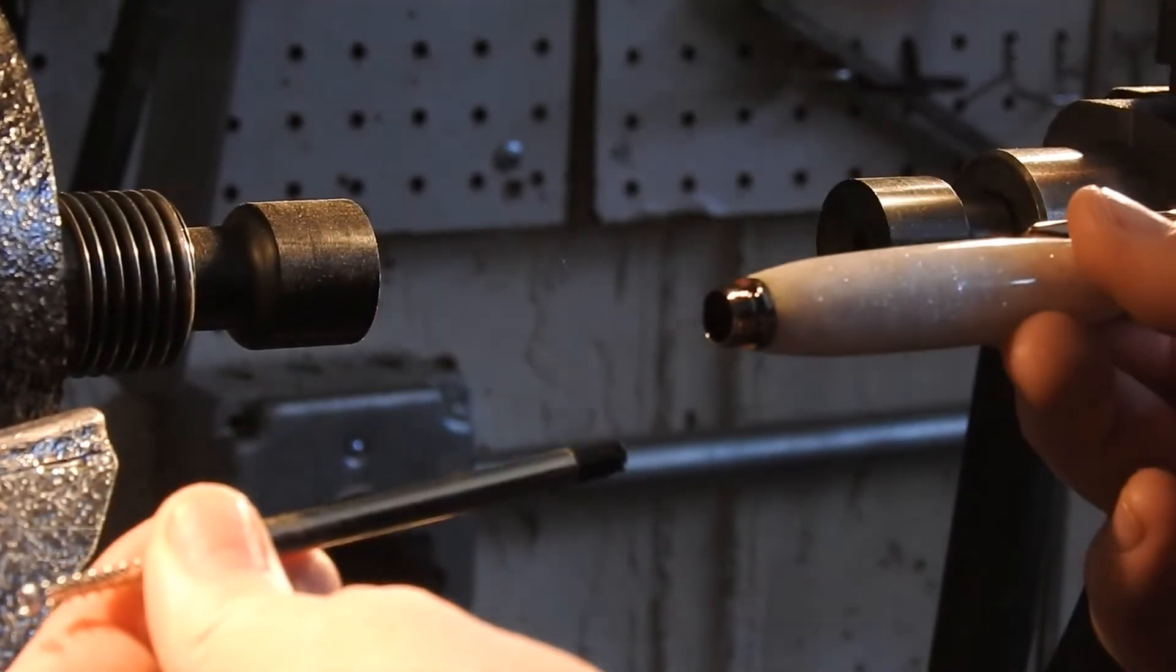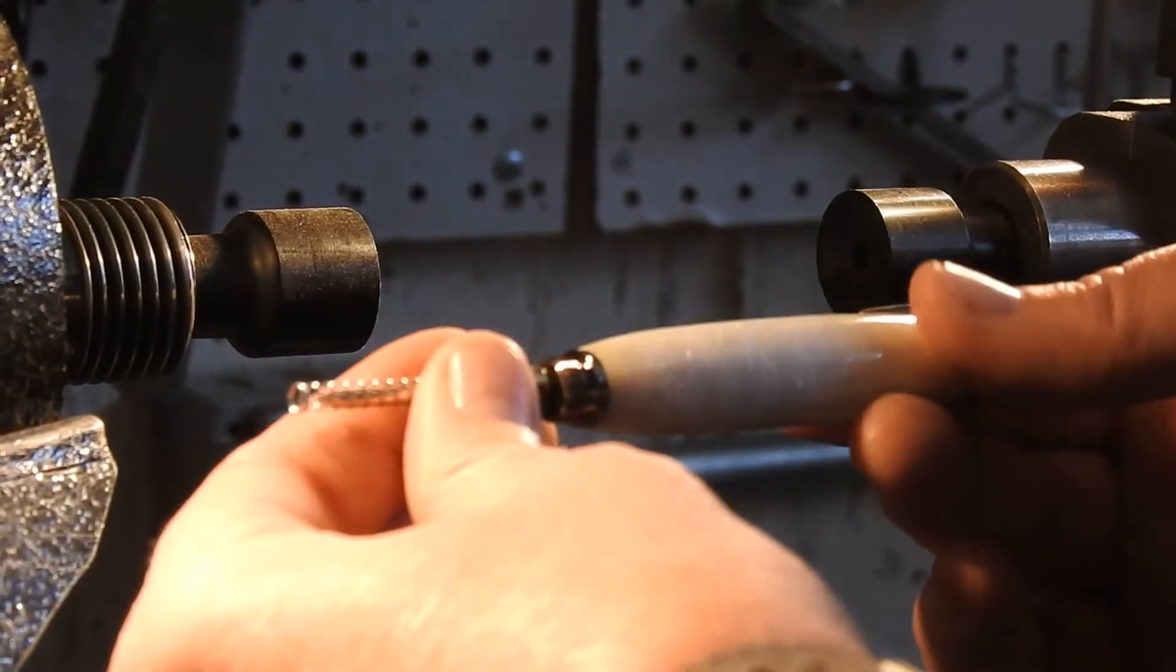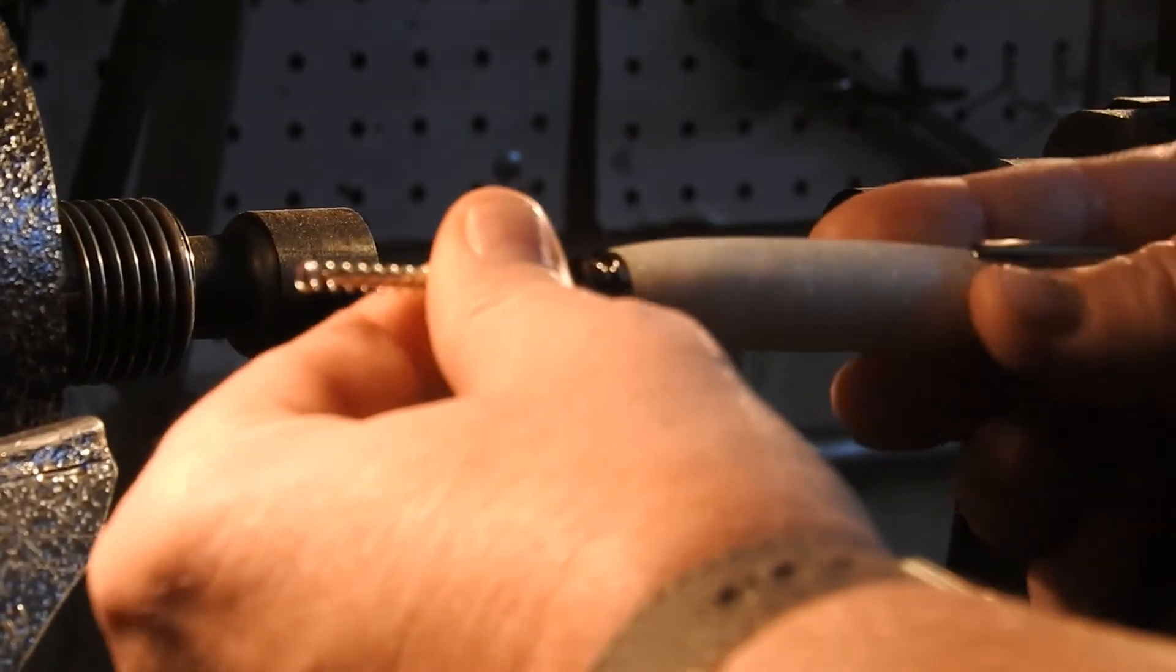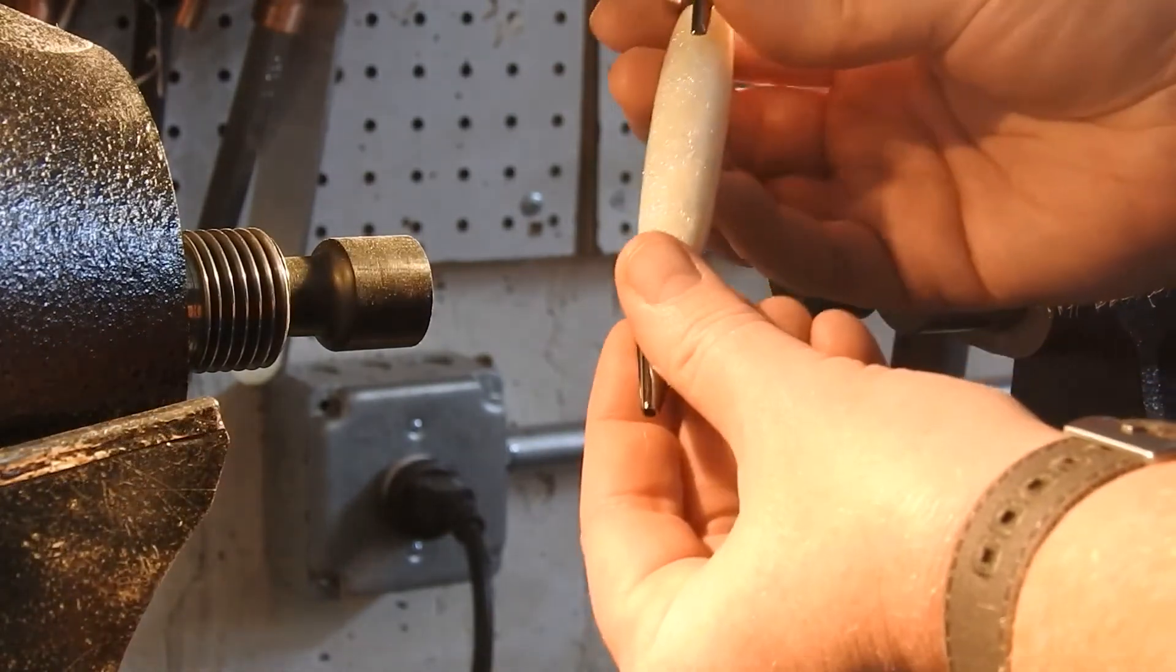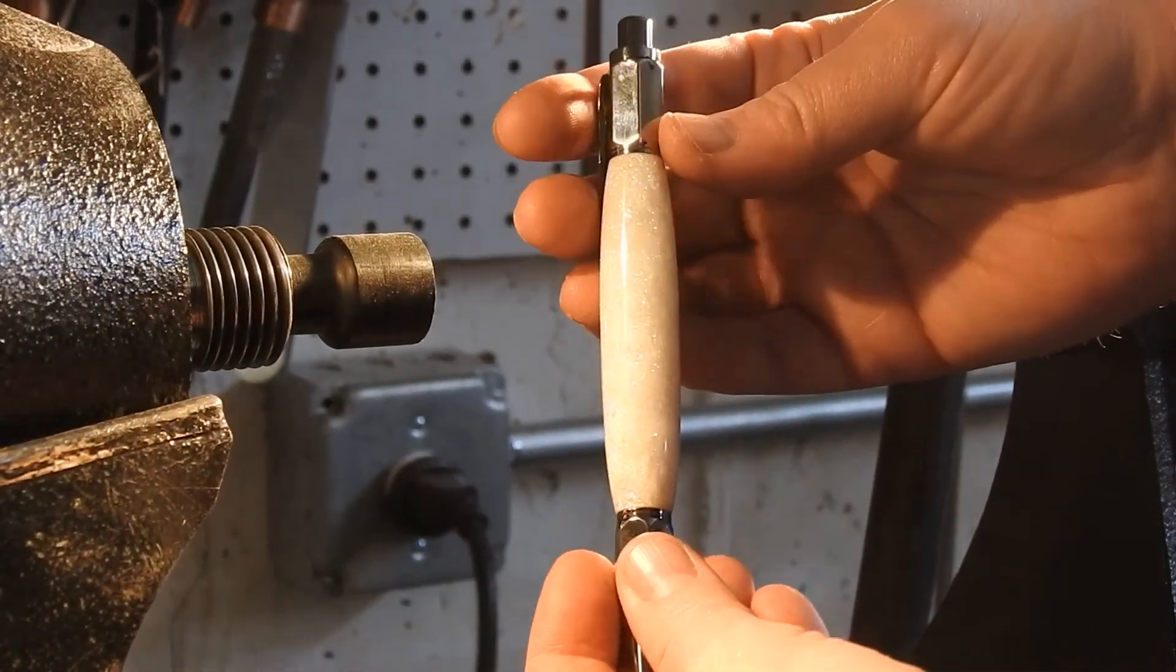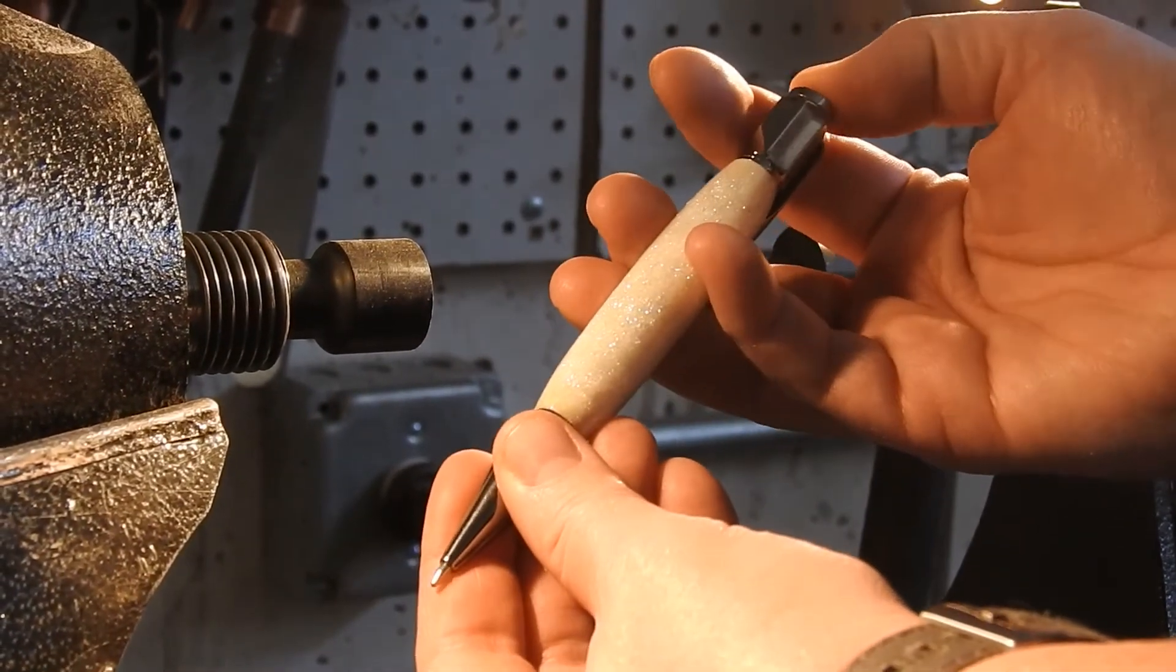Next I put the spring onto the tip of the refill and then put the refill into the tube, and then the camera magically turns off while I'm threading the tip onto the pen. So here is the finished product, and a couple of clicks just to make sure that it's threaded properly.